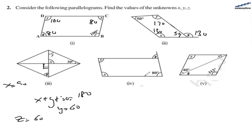In the fourth figure, we are given one angle as 80. Which means x will be equal to 180 minus 80, that is 100. y is equal to 80. And this angle will be 180 minus 80, that is 100. And z will be 180 minus 100, that is 80.